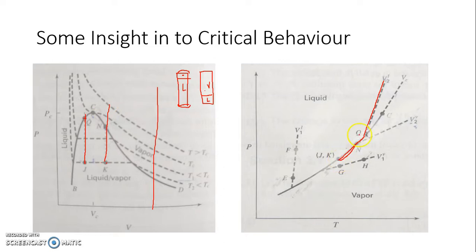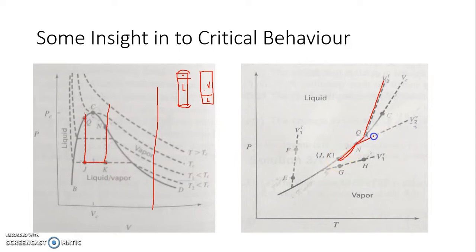The same process for path K to N is also shown on the PT diagram. However, on the PT diagram there is no volume axis visible, so points J and K are superimposed on each other — they appear as one point — whereas on the PV diagram they are clearly separate points. J represents more liquid, K represents more vapor, and the path K to N moves into the vapor zone along vV.